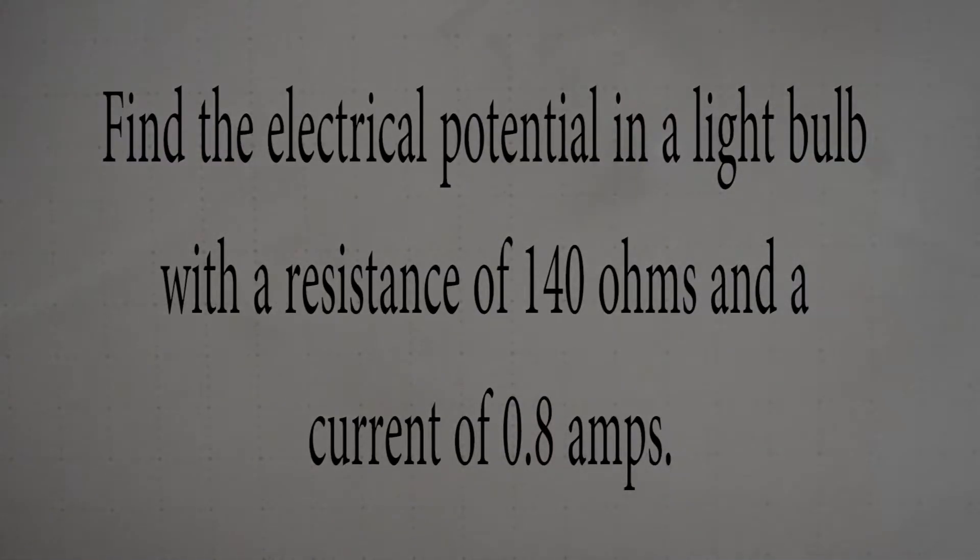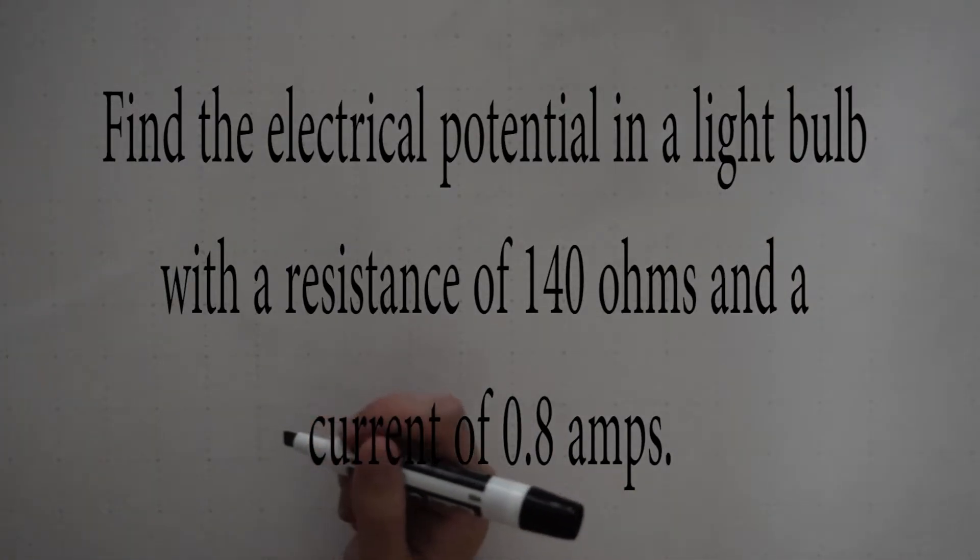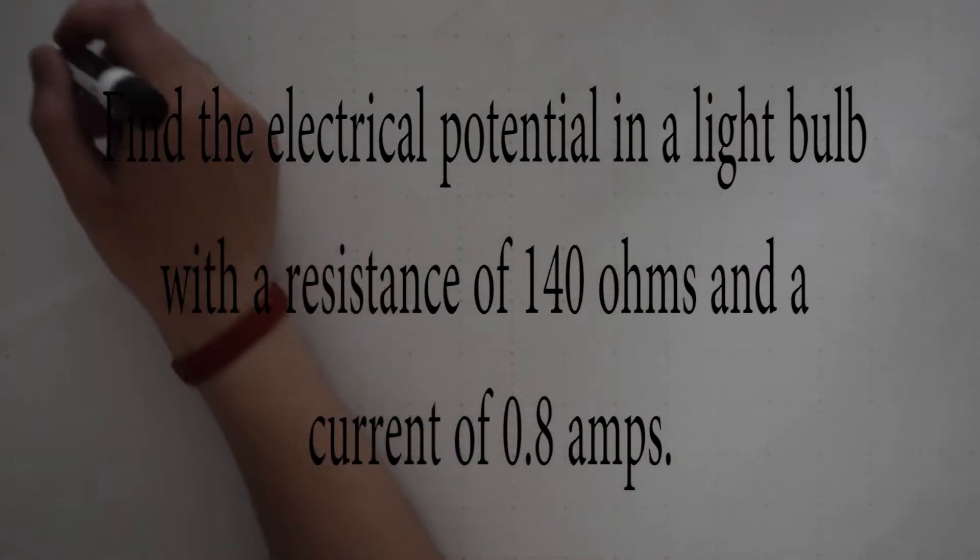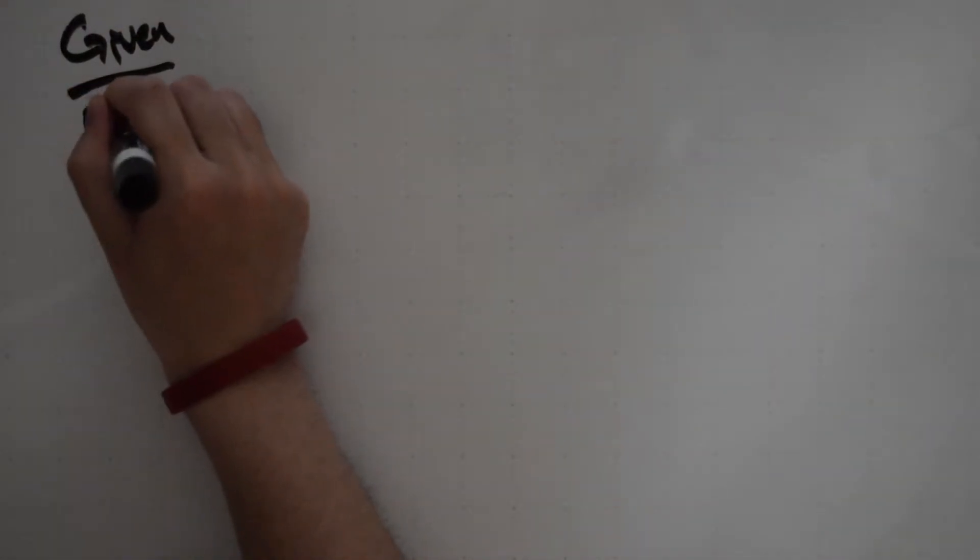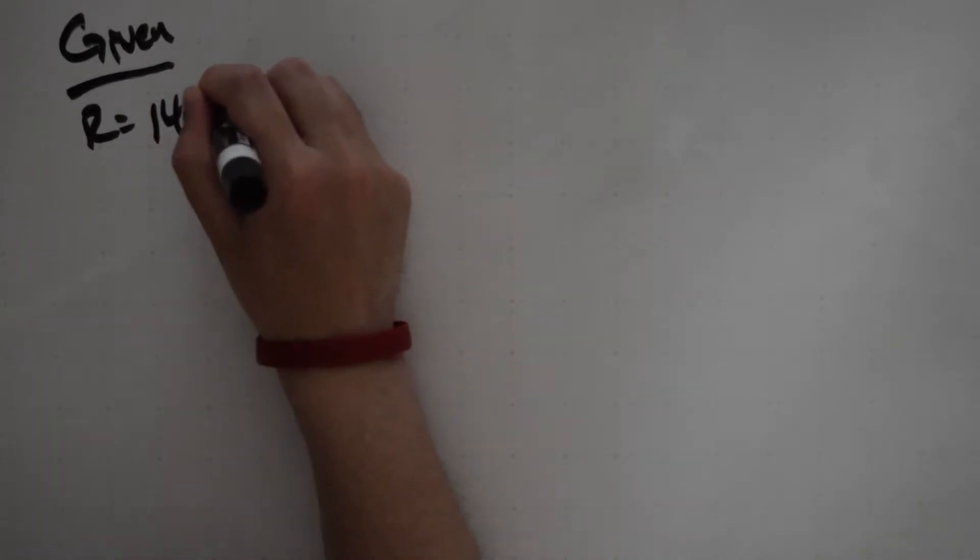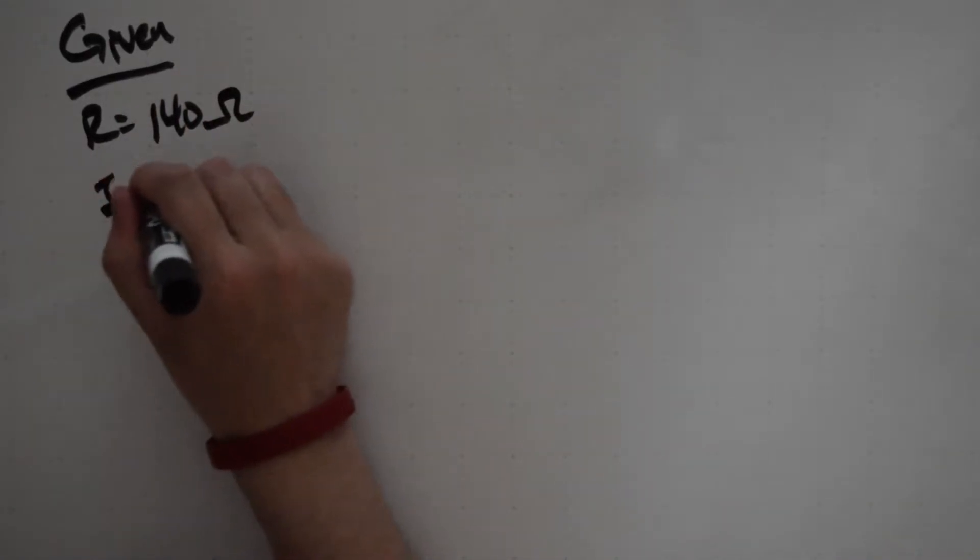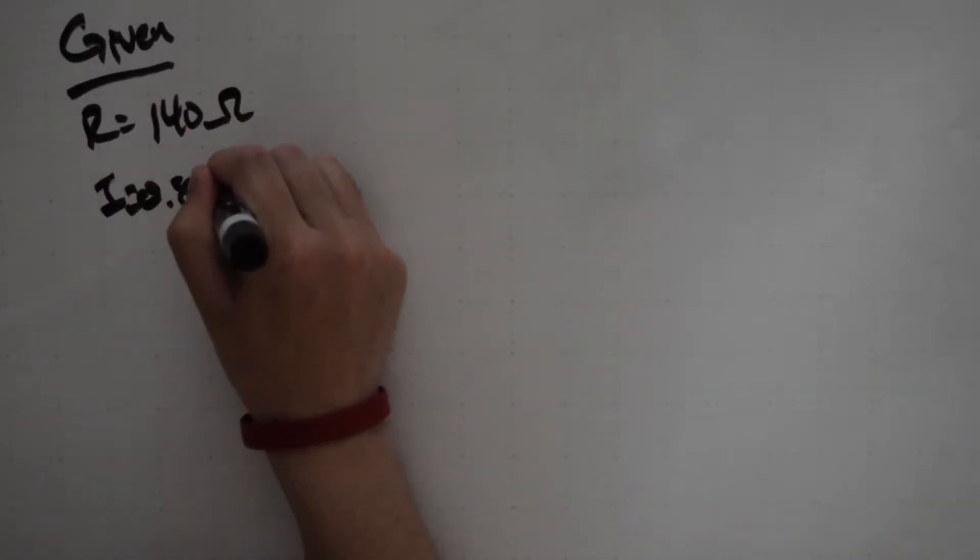Our first problem asks us: find the electrical potential in a light bulb with a resistance of 140 ohms and a current of 0.8 amps. First things first, as always we should write out what is given to us in the question. So we have a resistance of 140 ohms and we have a current of 0.8 amps.